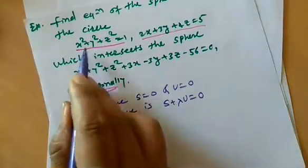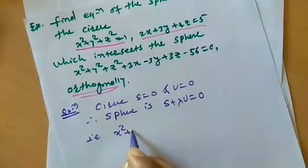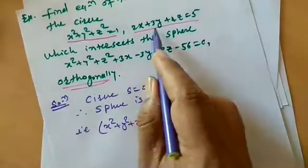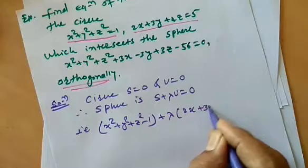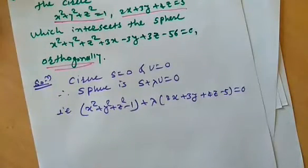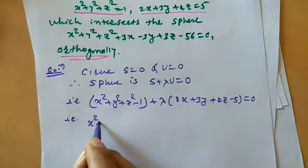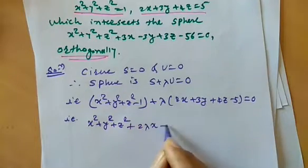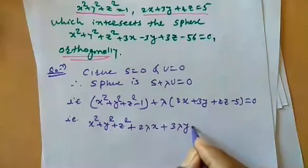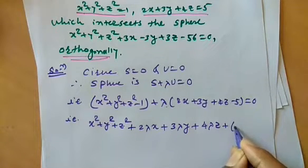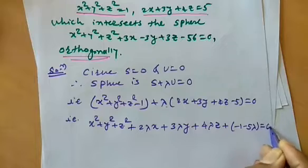As per the given problem, x squared plus y squared plus z squared minus 1 — this is S equal to 0 — plus lambda into 2x plus 3y plus 4z minus 5 equal to 0 — this is U equal to 0. This is our final equation of the sphere. Writing in general form: x squared plus y squared plus z squared plus 2 lambda x plus 3 lambda y plus 4 lambda z minus 1 minus 5 lambda equal to 0.